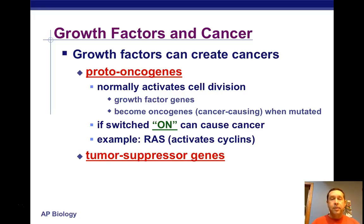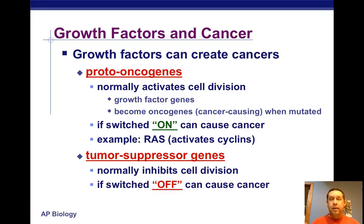There are also tumor suppressor genes, which are basically the opposite of proto-oncogenes. They normally inhibit cell division and are normally on. They can be switched off and cause cancer. An example is P53, sometimes referred to as the guardian angel gene. When these genes have mutations in them, that is when they become cancerous.